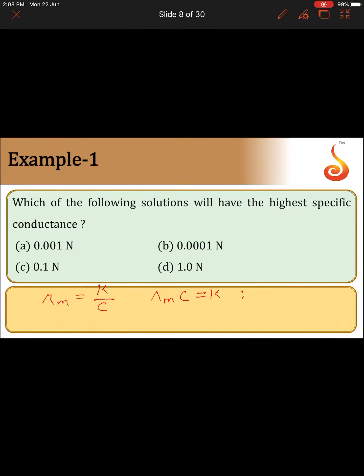That means K, specific conductance, is directly proportional to concentration. If the concentration is more, K value is also more, specific conductance is also more. Here in the given four concentrations...